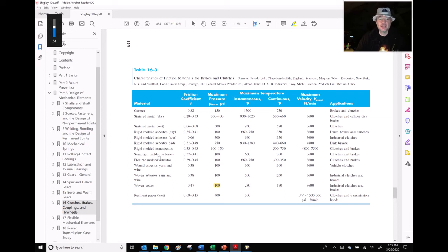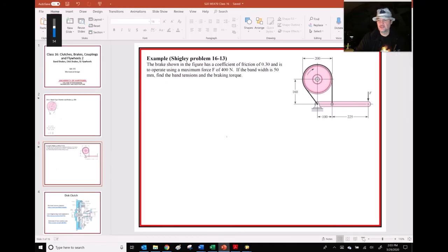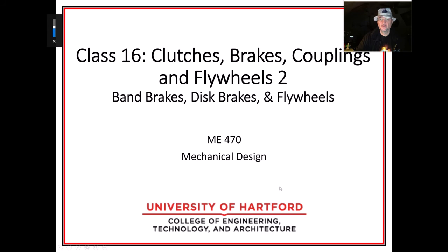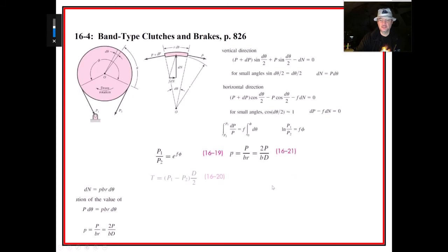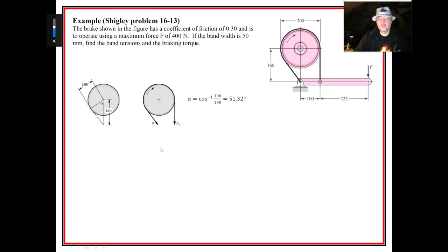Let's say we pick woven cotton as the brake lining material. Then we would use this pressure and find out what P1 was going to be. We'd need P2 from that, which we could get from the wrap angle. Then we could find out what the braking torque was going to be, and from a free body diagram figure out what the force would be.